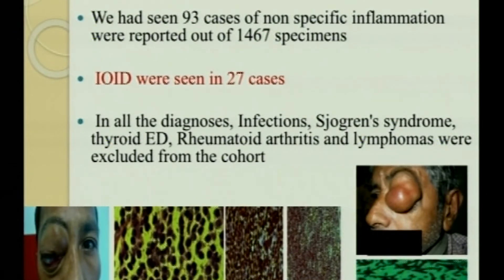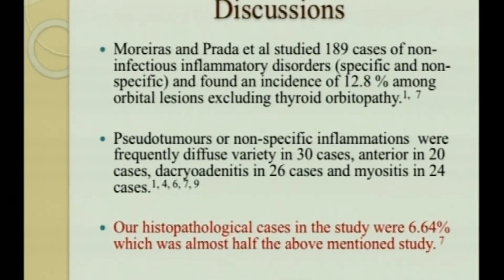Total 93 cases were seen and IOID was seen in 27 cases. In all cases, infection, thyroiditis, rheumatoid arthritis, lymphomas, and GPA were excluded from the cohort. Morius and Prada et al. studied 189 cases of non-infectious inflammatory disorder, both specific and nonspecific, and found the incidence was 12.8% among orbital tissue, excluding thyroid orbitopathy. Pseudotumors in their series were seen in 30 cases, dacryoadenitis in 26 cases, and myositis in 24 cases.